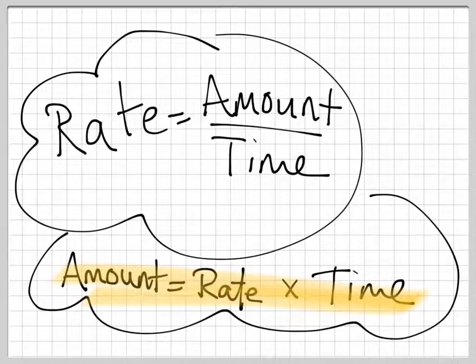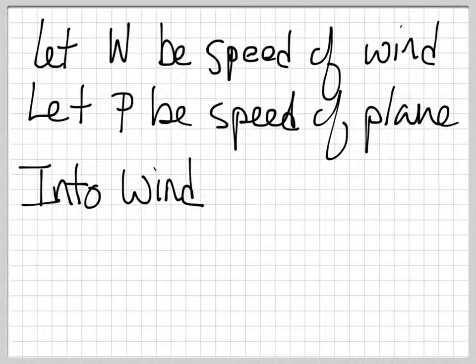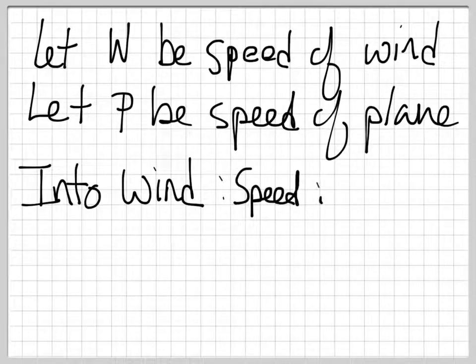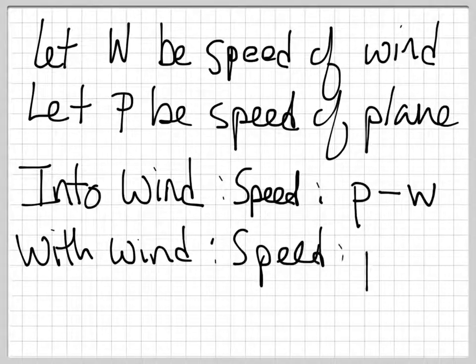So this is going to help us find our rate. When we're flying into the wind, the wind is working against us. And so the speed is given by the speed of the plane minus the speed of the wind. And when we fly with the wind, with the wind at our back, our speed is the speed of the plane plus the speed of the wind. It's helping us.